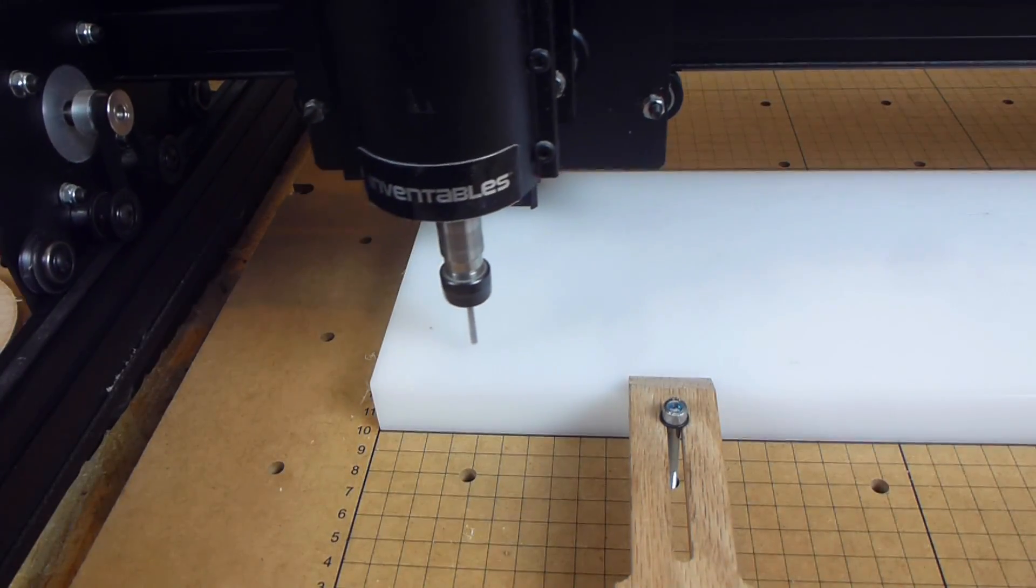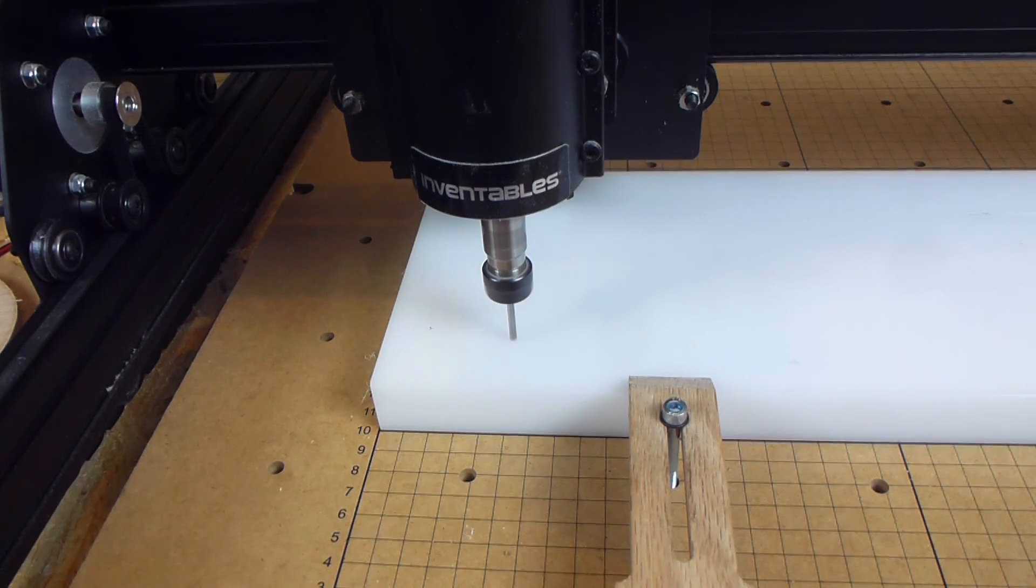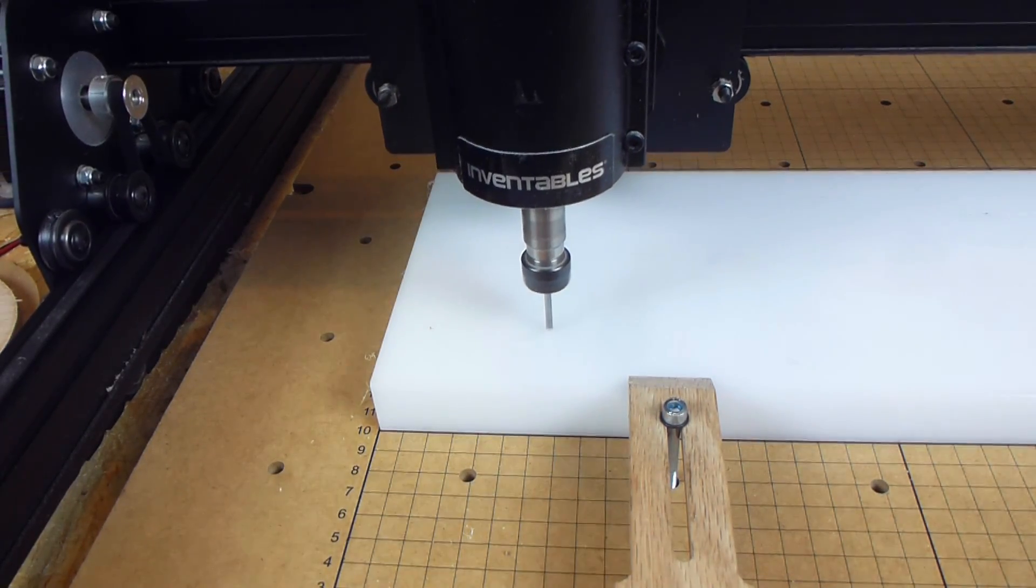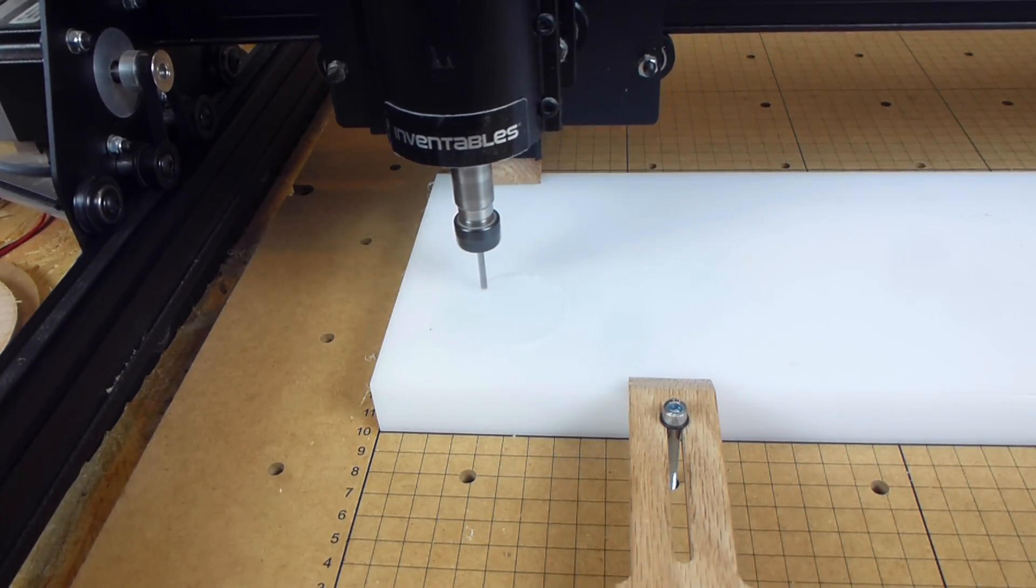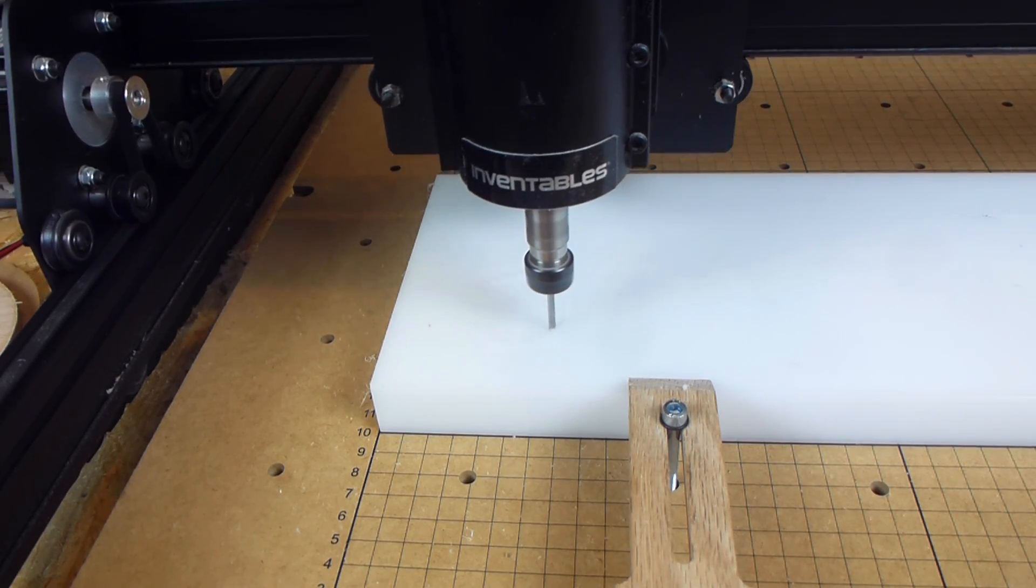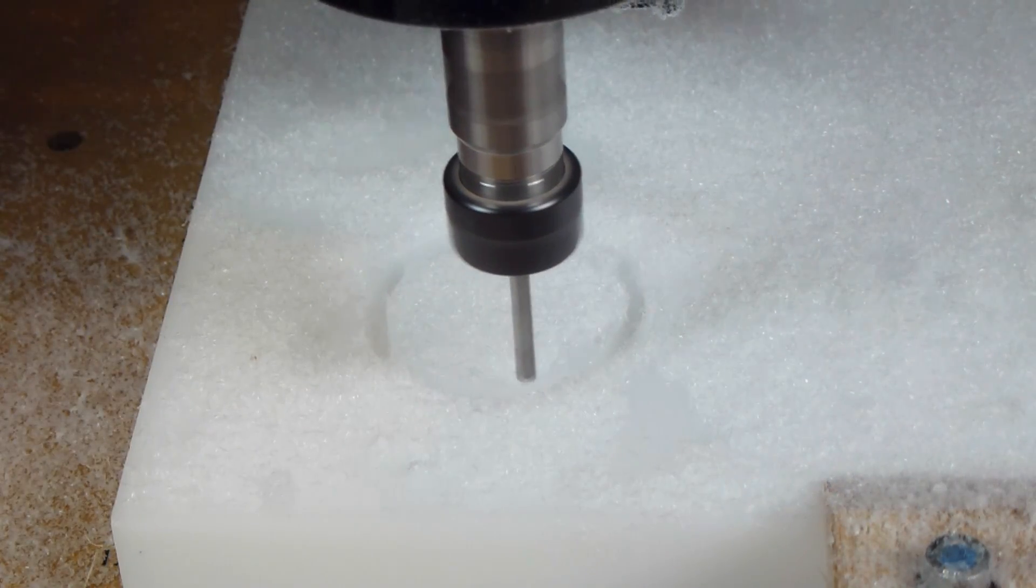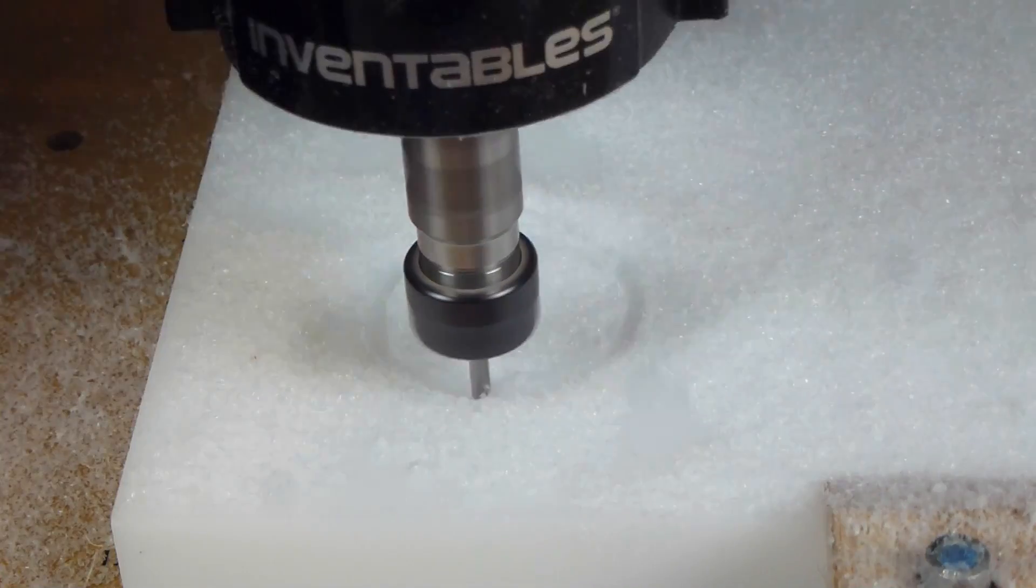The material is 25mm thick polyethylene that I got as a waste piece from a local manufacturer for free. With the current spindle I cut out the shape but only a third of the way through, otherwise it would take forever to complete the job.